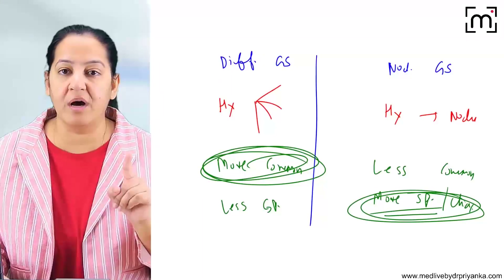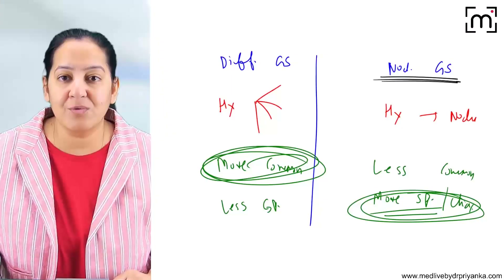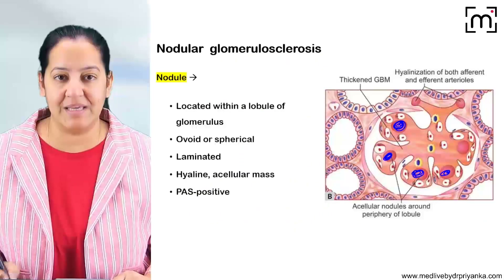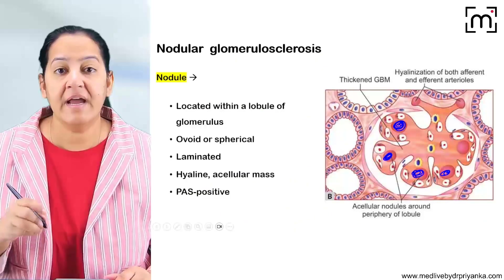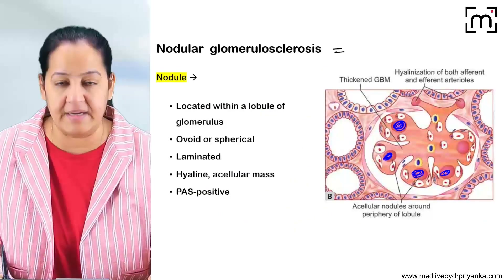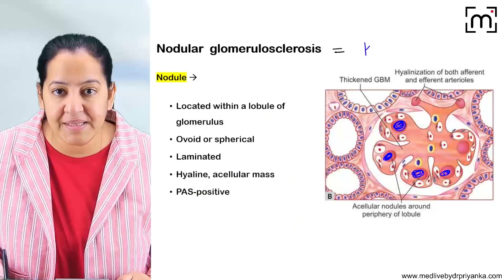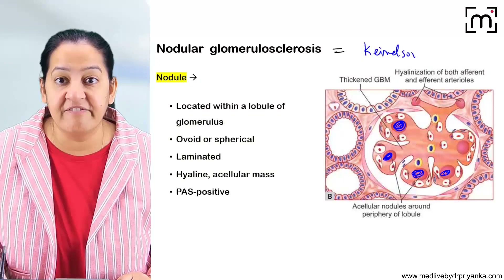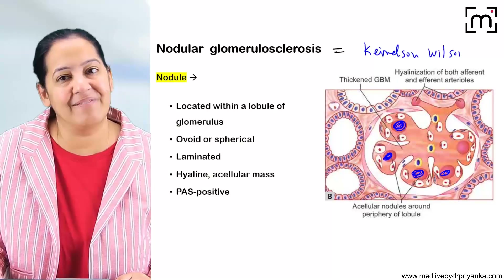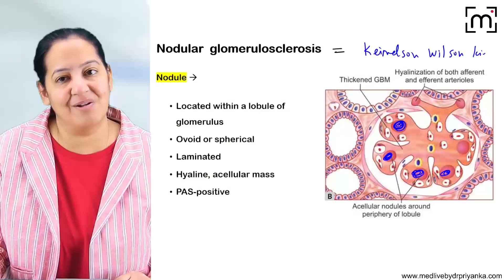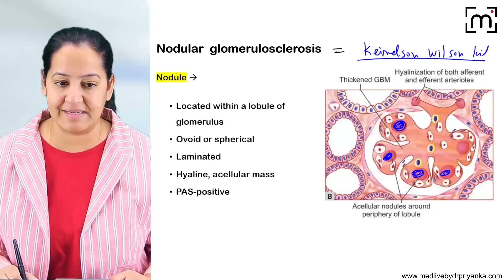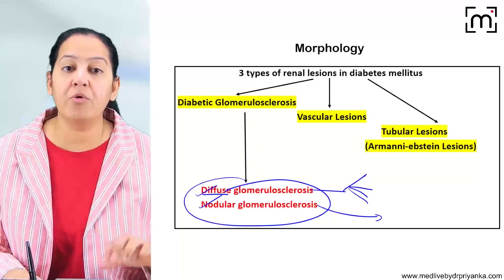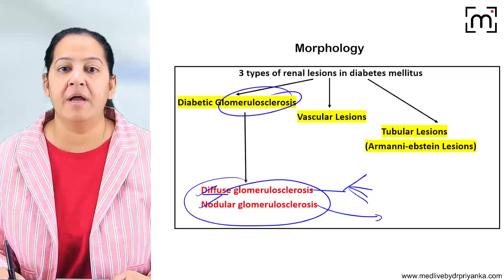Please don't forget the other name for nodular glomerulosclerosis — it is known as Kimmelstiel-Wilson kidney, also abbreviated as KW kidney. This pattern is more specific for diabetic nephropathy.